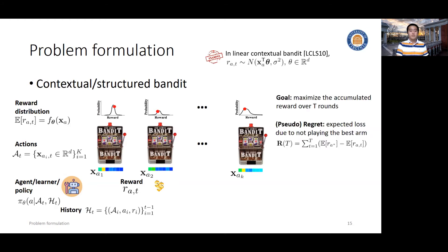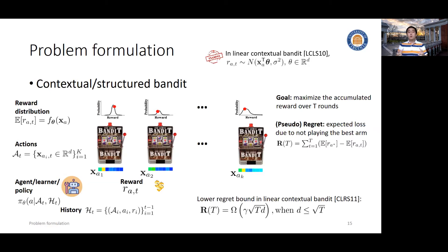Does this make the problem easier? The answer is no — we face the same problem of maximizing accumulated reward over T rounds, and we still use regret as a metric. Lower bound analysis tells us this is not easy at all: it's still a square root T regret. The scalar coefficient changes from the number of arms K to the number of features C, which is expected because more features require more samples to estimate the corresponding parameters.